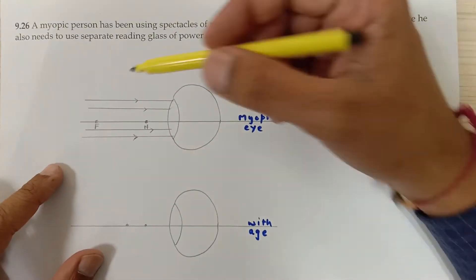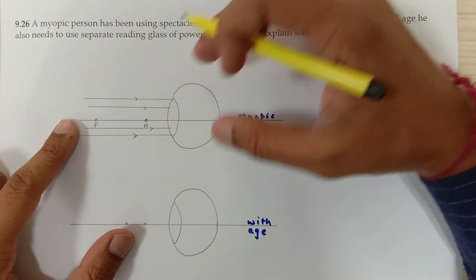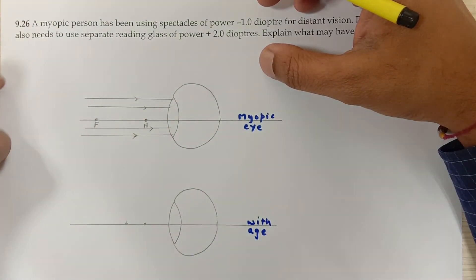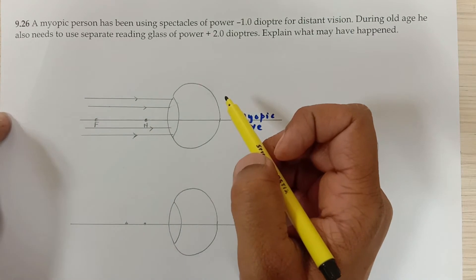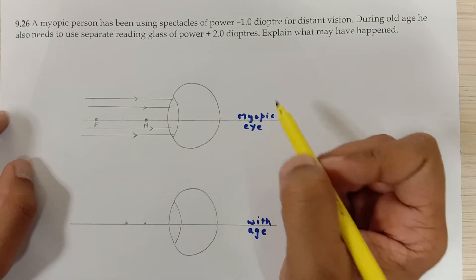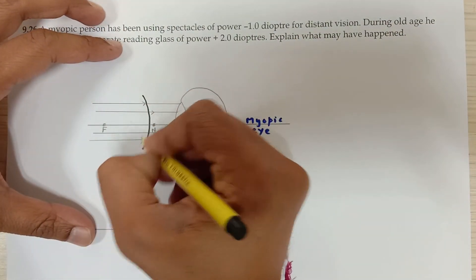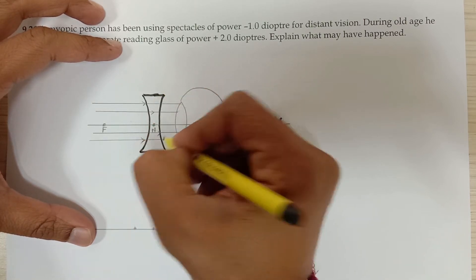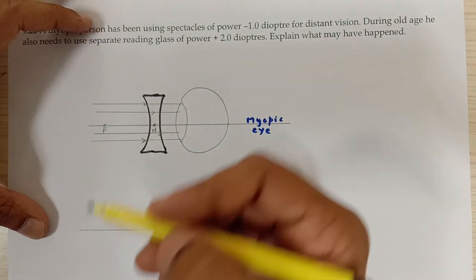In his younger days, this person had a myopic eye — he was not able to see objects at infinity. When he tried to see things at infinity, the image was formed before the retina because all rays were converging before the retina. That is myopia. The lens used for correction of this disorder was a concave lens.